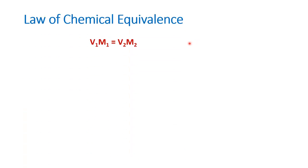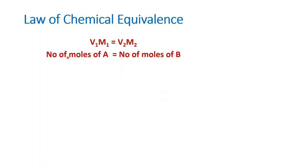First, let us see the law of chemical equivalence. We are all familiar with this particular relationship: V1M1 = V2M2. If it is normality, we will say V1N1 = V2N2. These are called the law of chemical equivalence, which is essentially that the number of moles of A equals the number of moles of B. We are equating the number of moles of one compound with the number of moles of another compound. Using this relationship, if we know three values, we can find the fourth value.